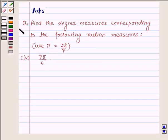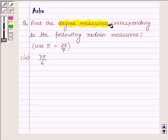Hi and welcome to the session. Let us discuss the following question together which says find the degree measures corresponding to the following radian measures. And the fourth part is 7π/6.